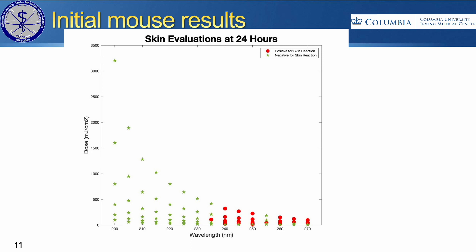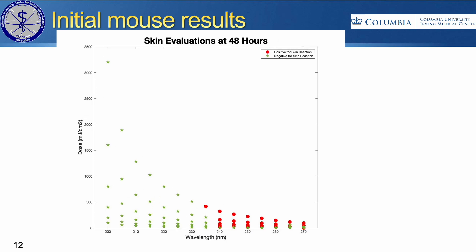These are our initial results with the mouse at each wavelength. The stars represent exposures that did not cause any erythema, edema, or any visible change. The red dots are where we did observe that. This is at 24 hours — and then 48 and then 72. We did not see any erythema or signs of damage from any wavelength less than 230, even going up to hundreds of millijoules per centimeter squared.